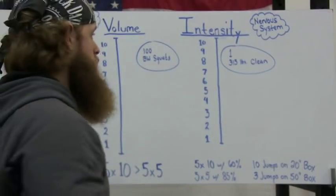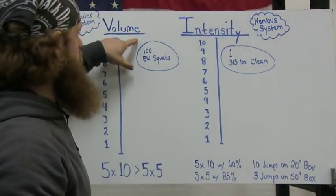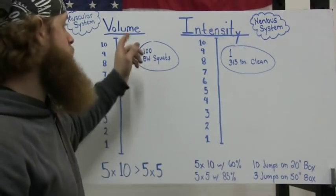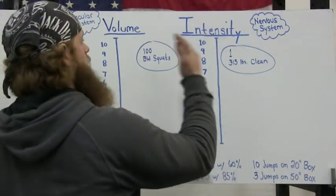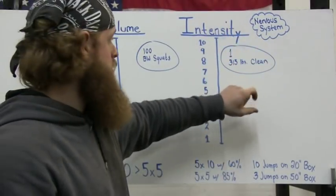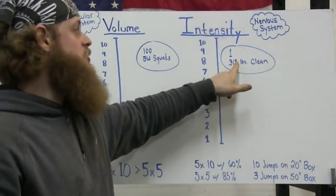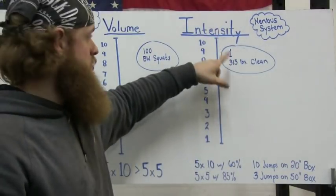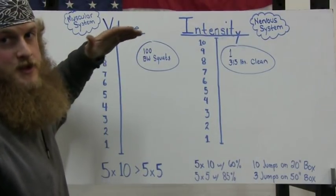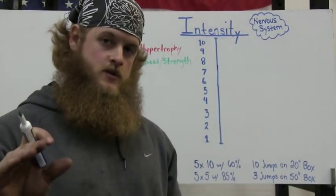Here's an example: a high volume workout of 100 bodyweight squats — the intensity is going to drop. A bodyweight squat is not very difficult to do, but it's going to hurt because you're doing 100 of them. On the other side, if you were to do one 315-pound clean at your max, the volume is extremely low — can't get any lower — but the intensity is extremely high. So volume is at ten, intensity is at one, and vice versa.